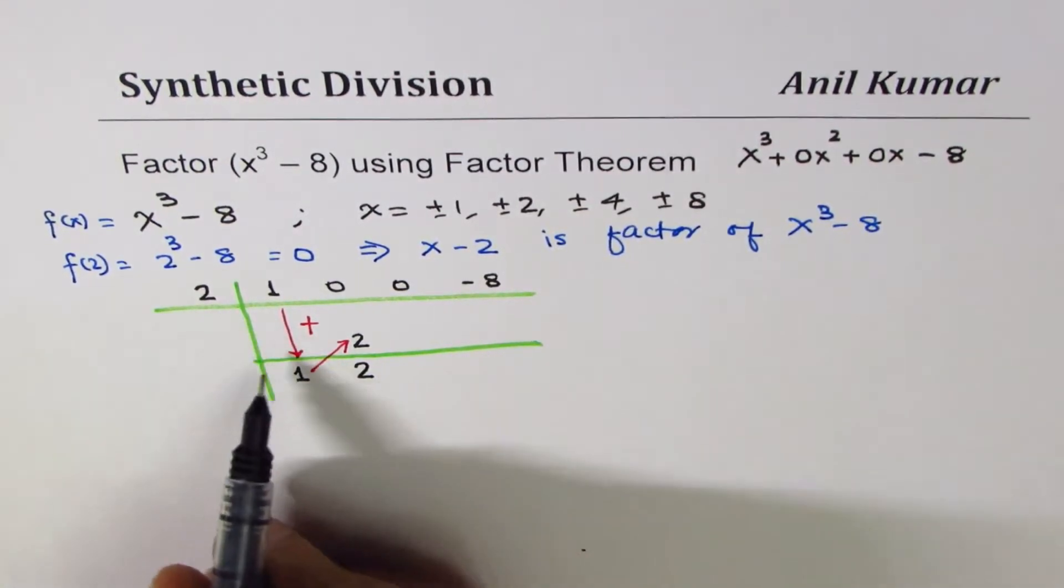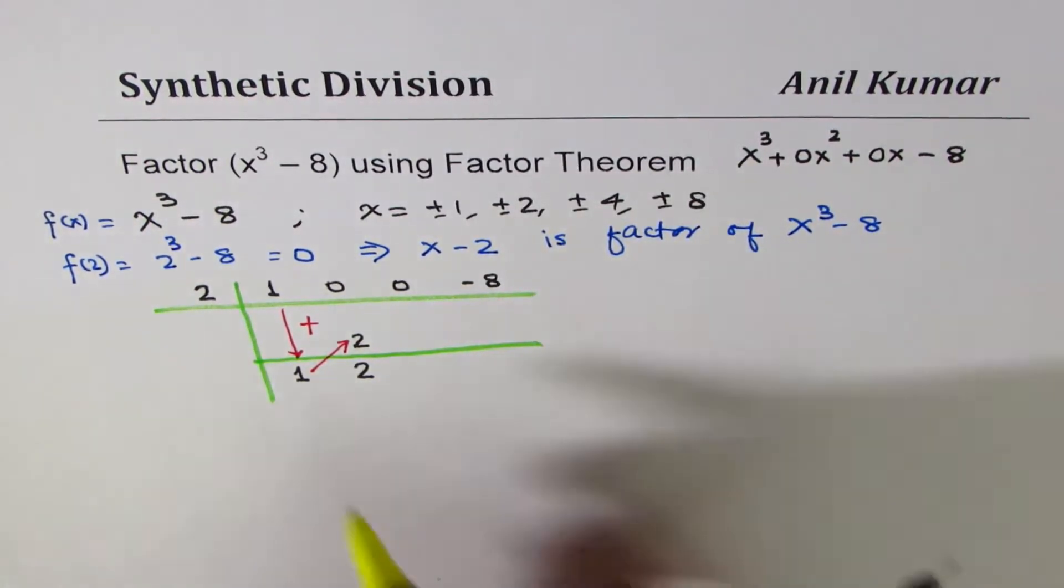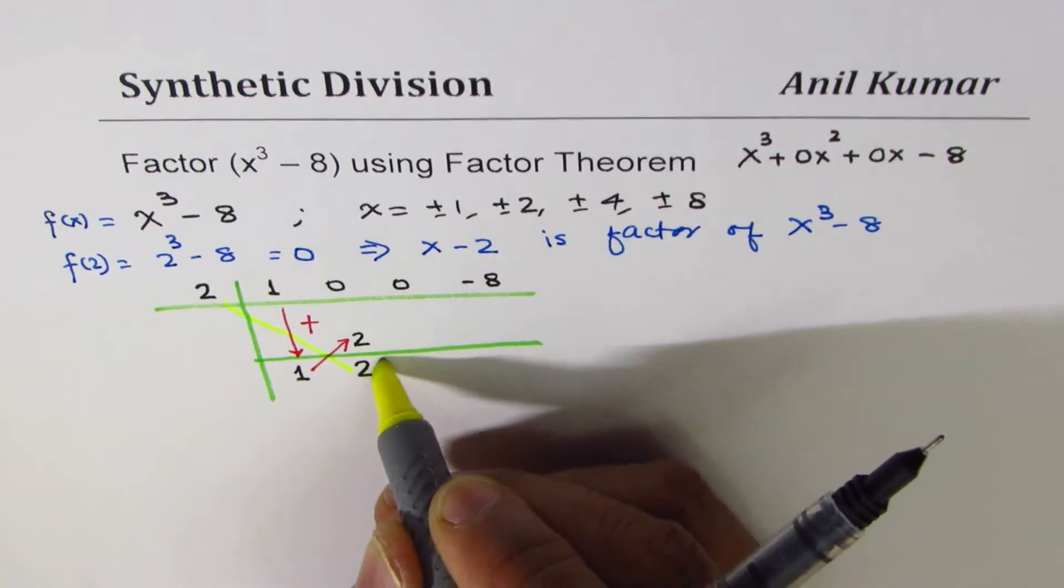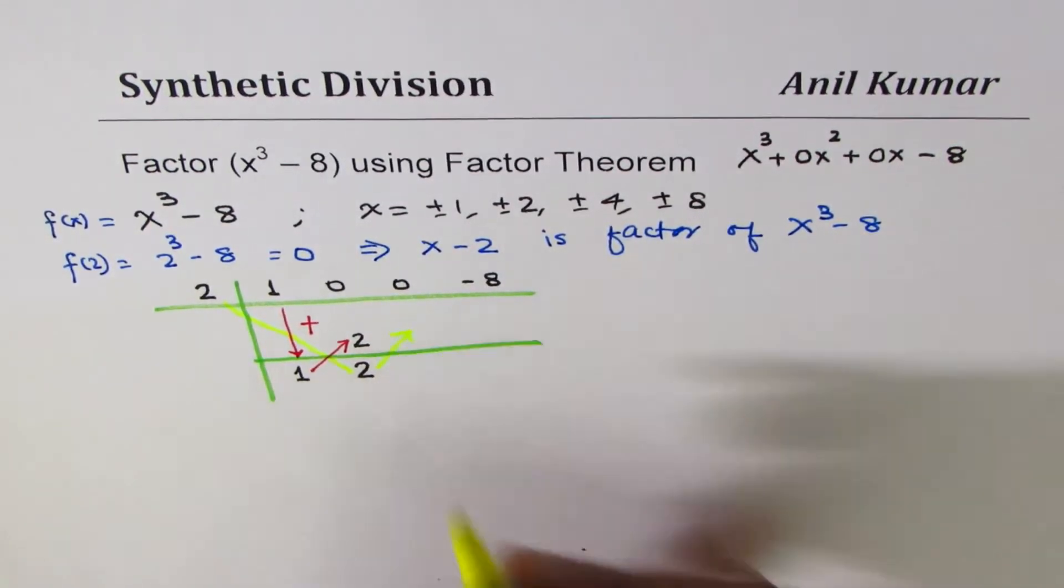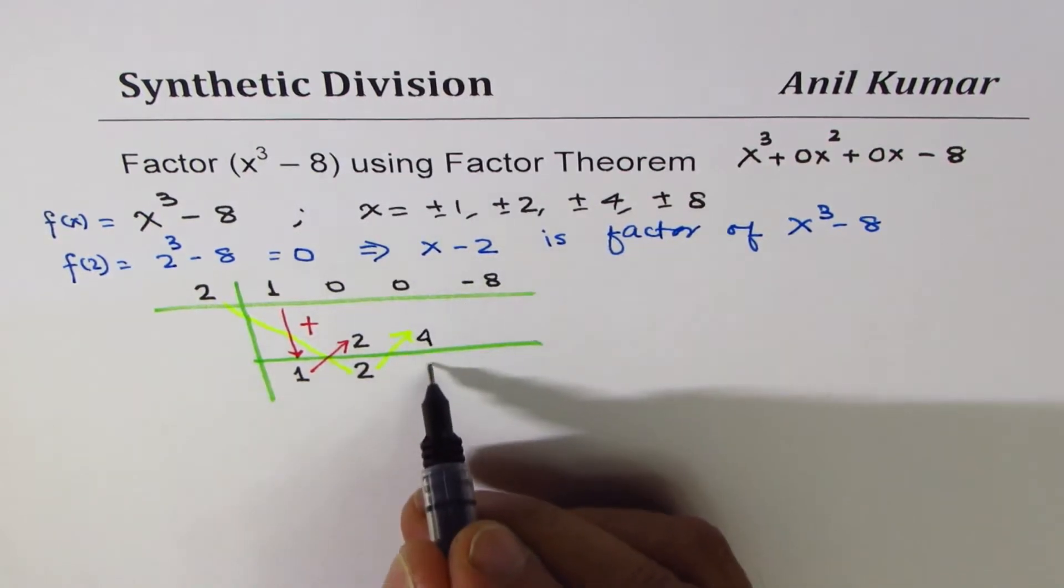Now we'll do the same thing. We'll multiply 2 by 2, correct? So we have times 2 by 2, and write it here. 2 times 2 is 4. When you add 0 and 4, you get 4.